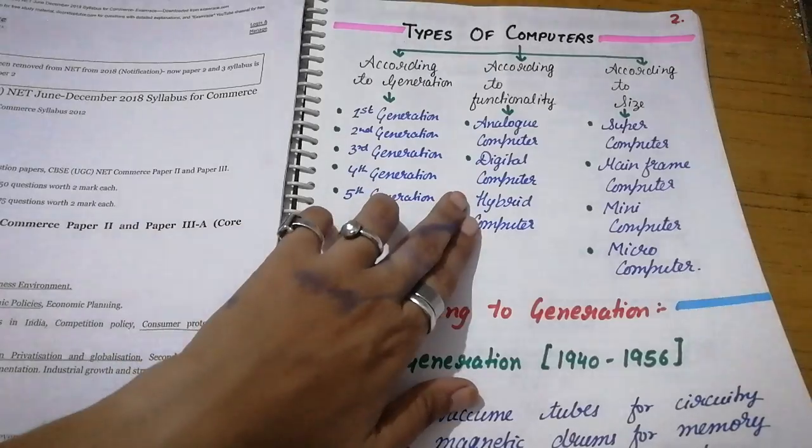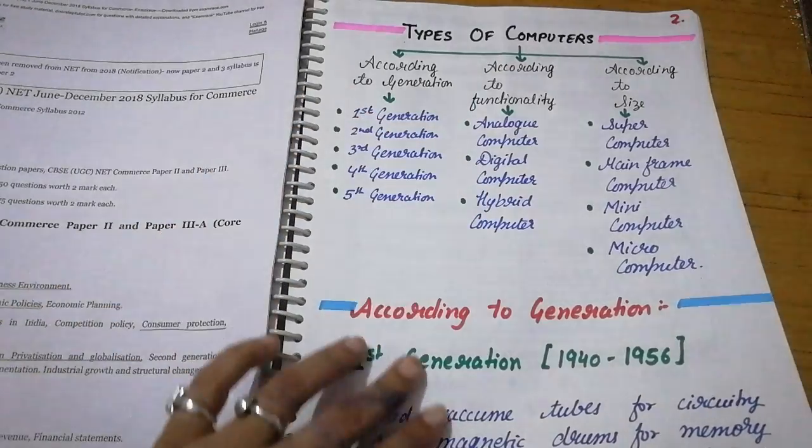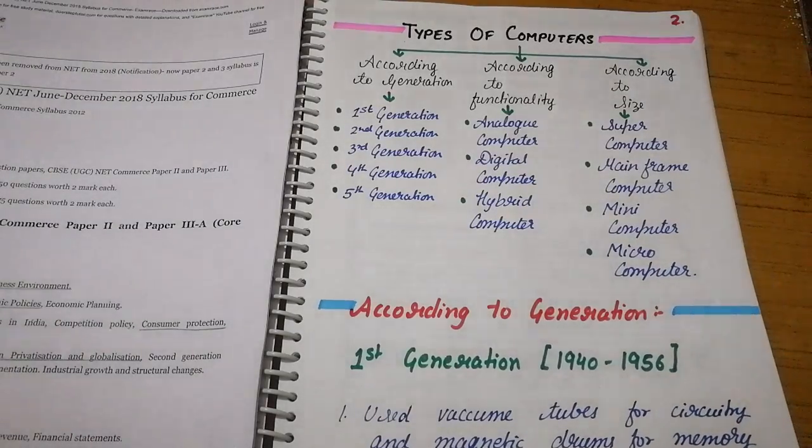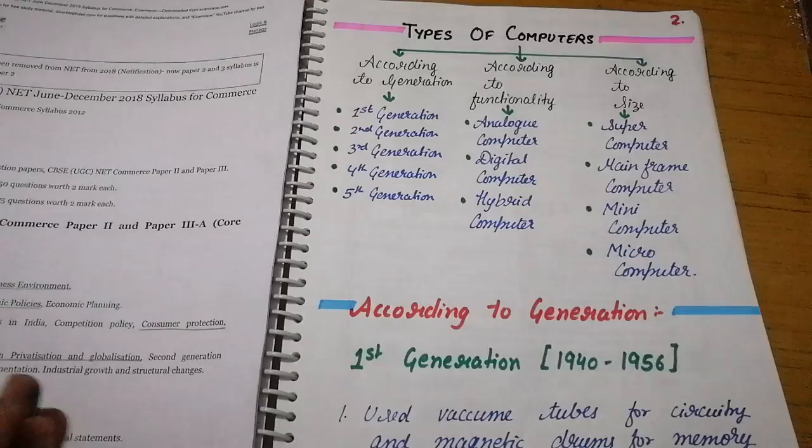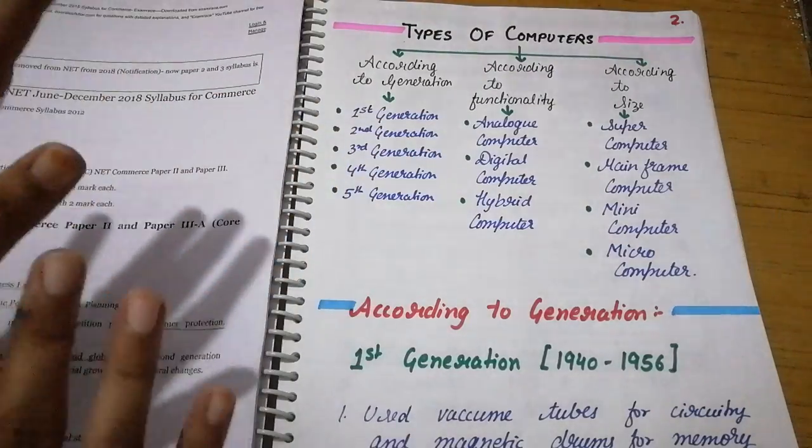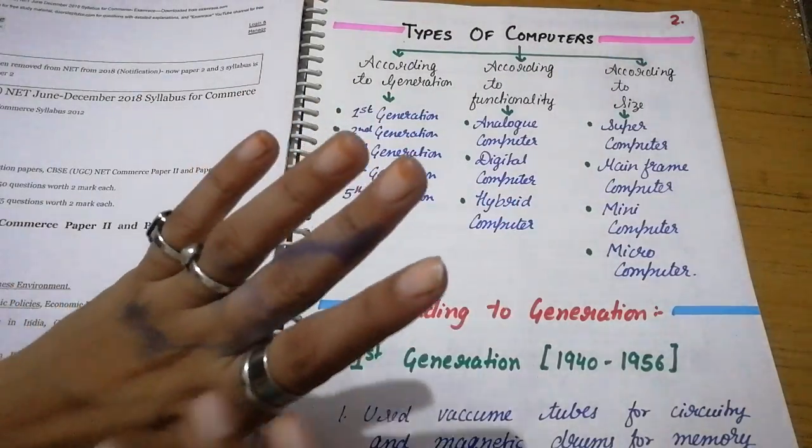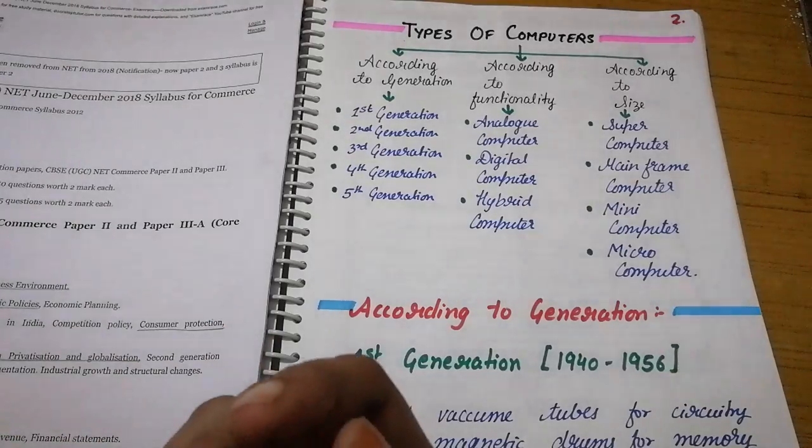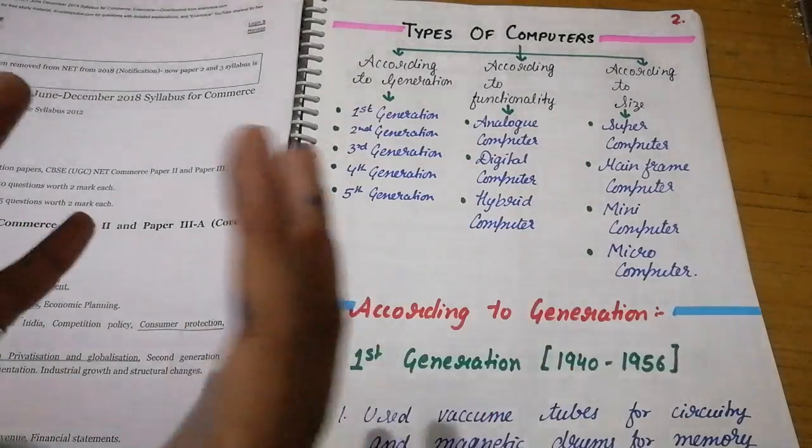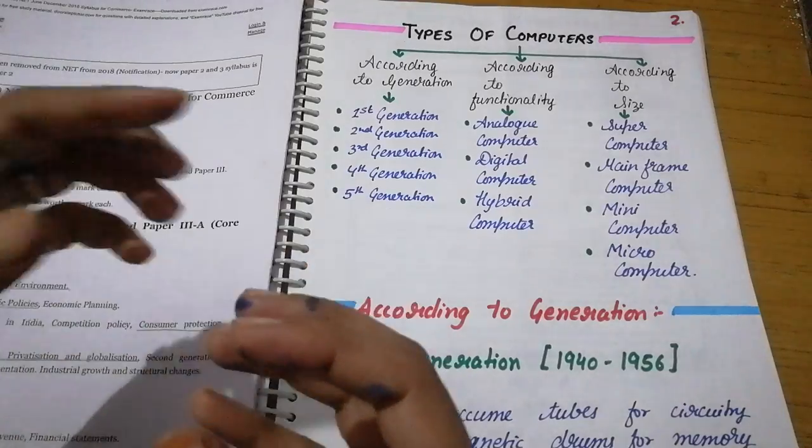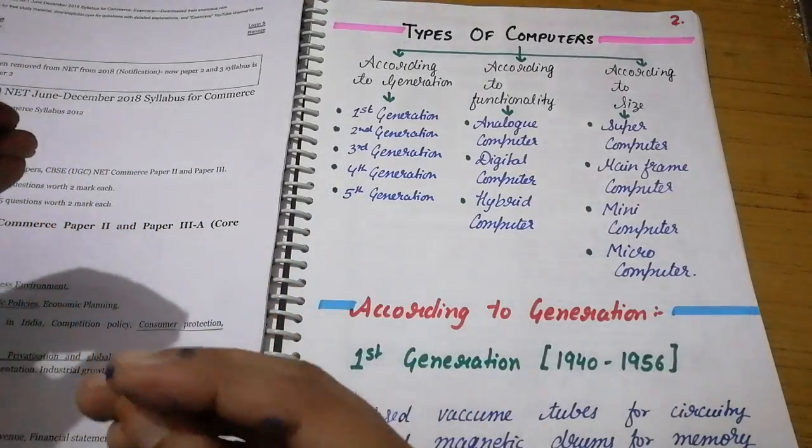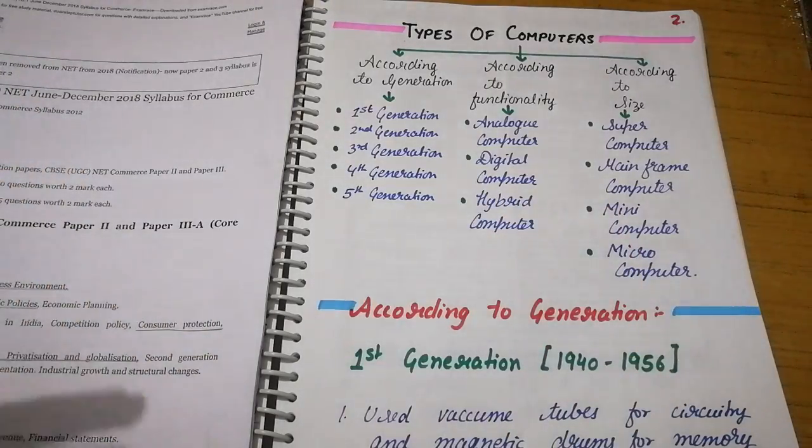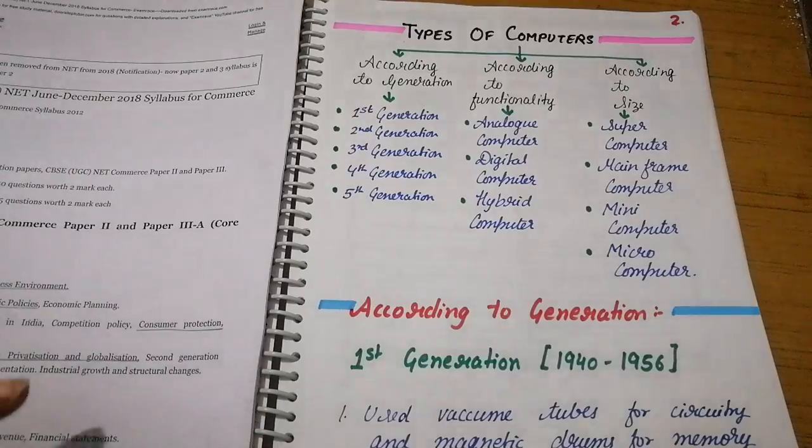Last time we covered classification according to generation. Now we are going to do classification according to functionality. According to functionality, we have three types of computers: analog computers, digital computers, and hybrid computers. Analog and digital are different types, but hybrid is a combination of features from both analog and digital to create a new combined computer.